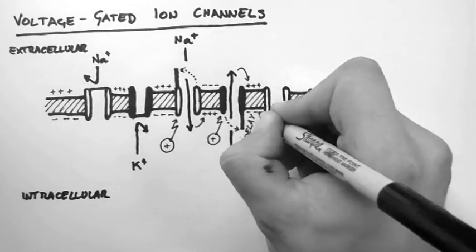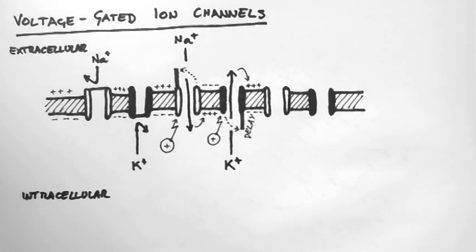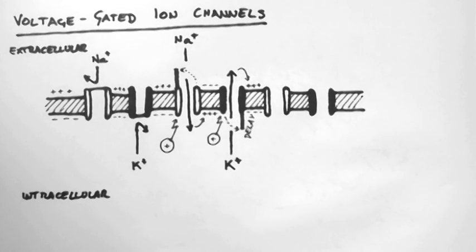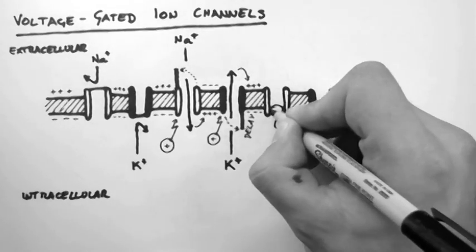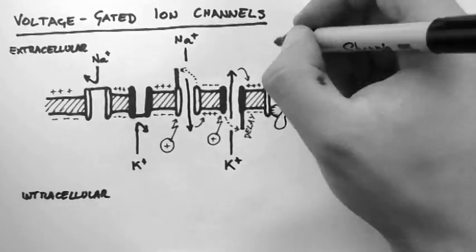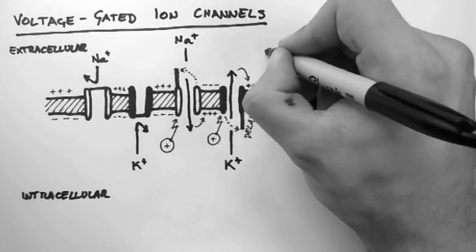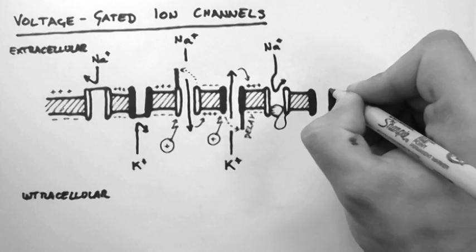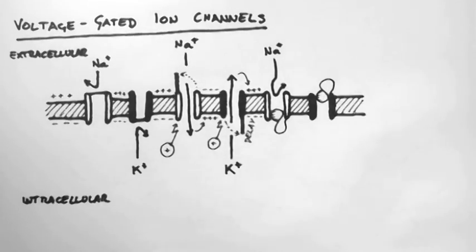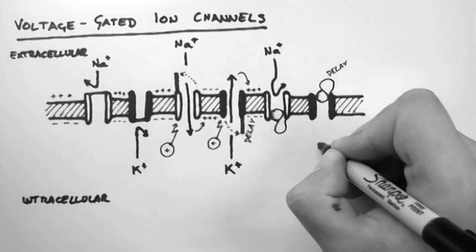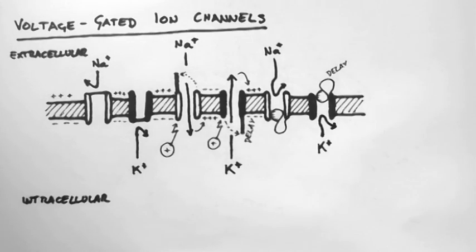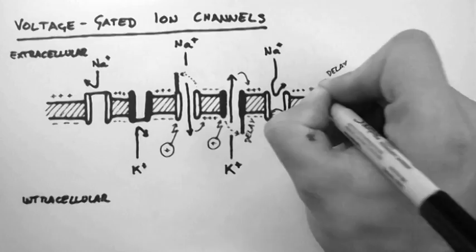This returns the membrane potential back toward the resting membrane potential. These channels are both open at the moment, so they need to be closed. The sodium channels close about the same time the potassium channels open, and they close by this ball and chain method. This ball gets stuck in the channel and sodium can't flow through anymore. After a delay, the potassium channels also close. Now potassium can't flow, and this keeps the membrane potential back near the resting membrane potential.